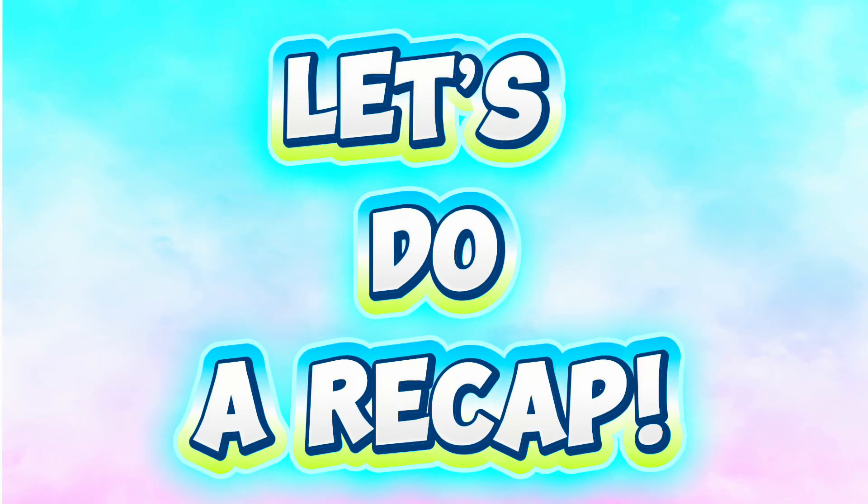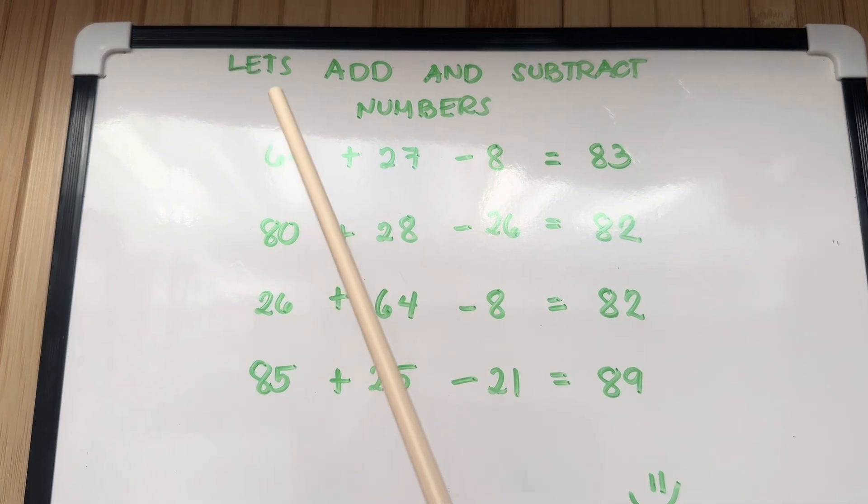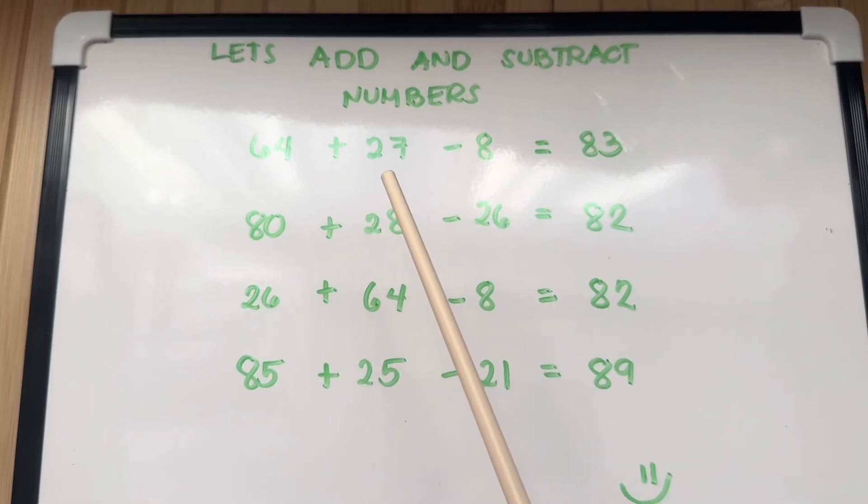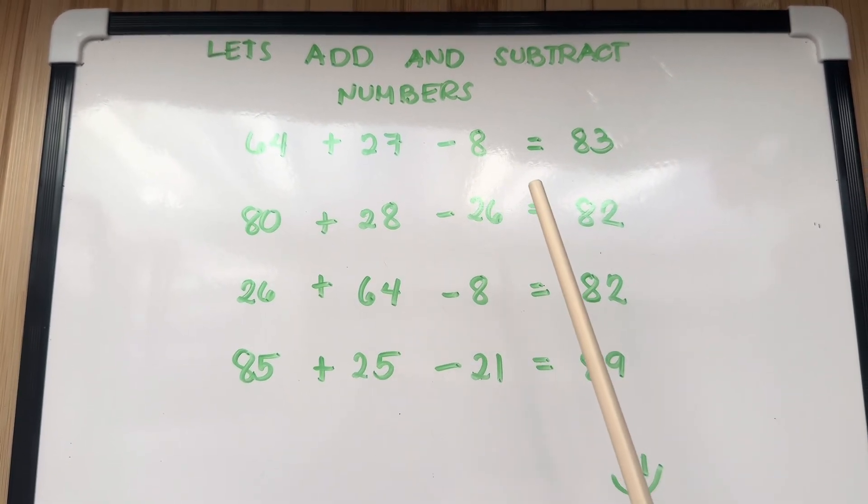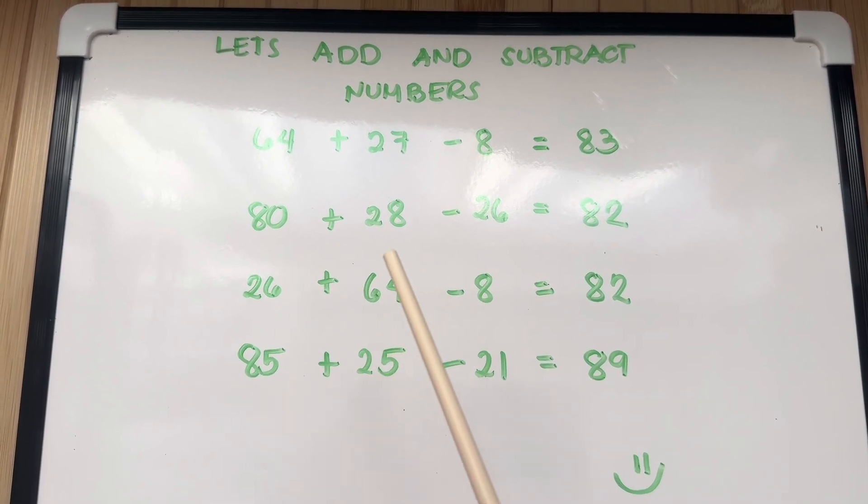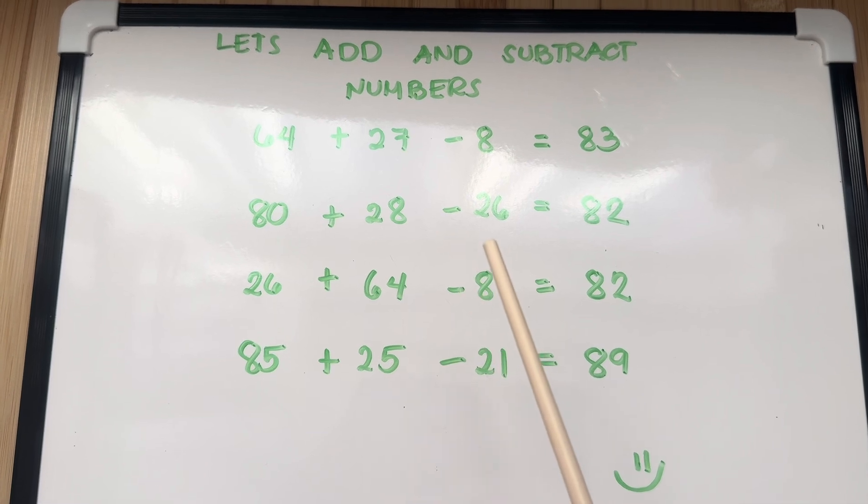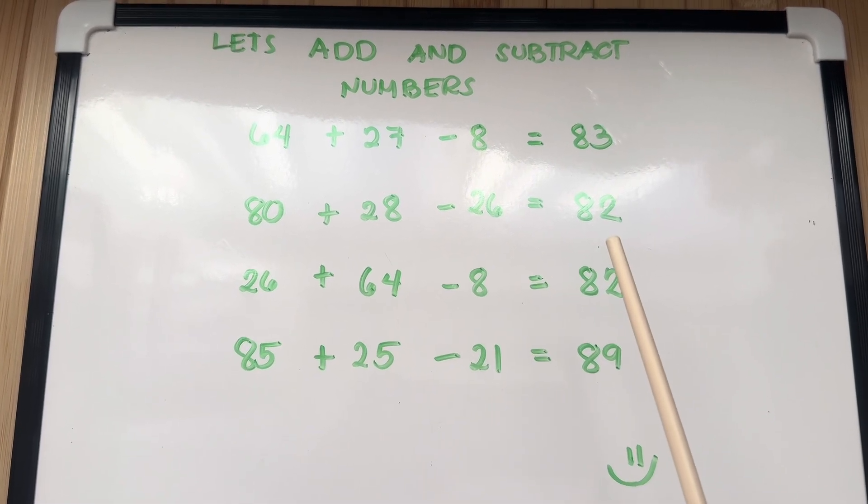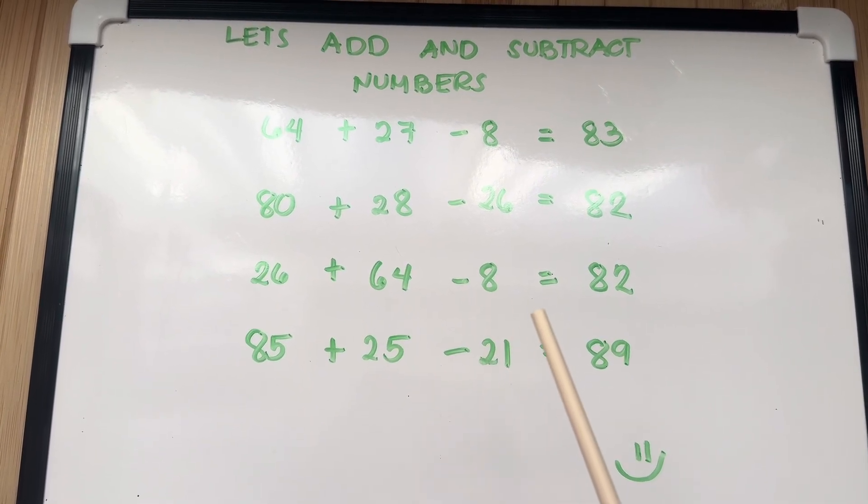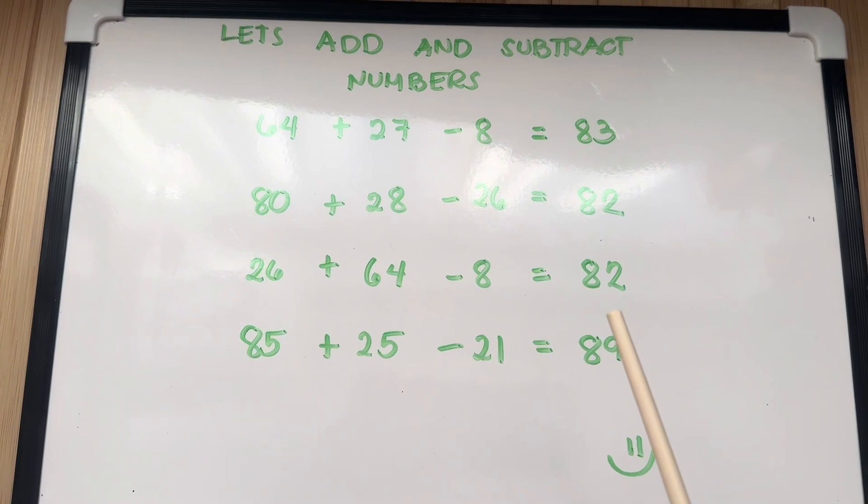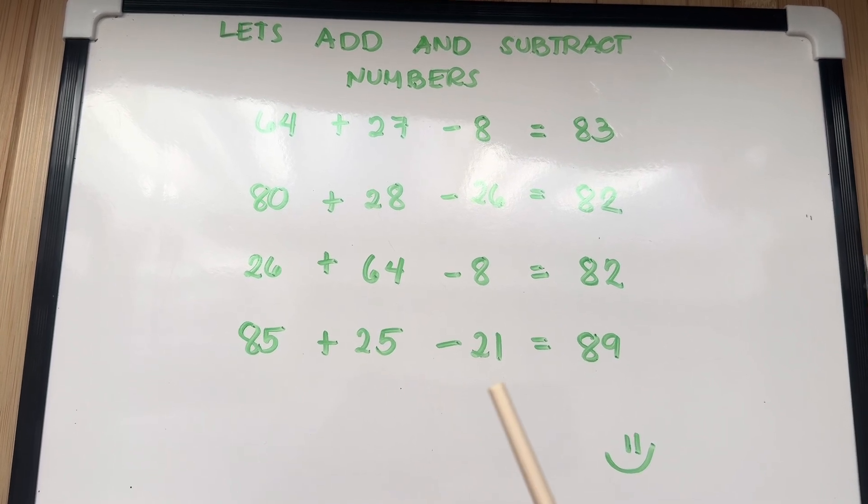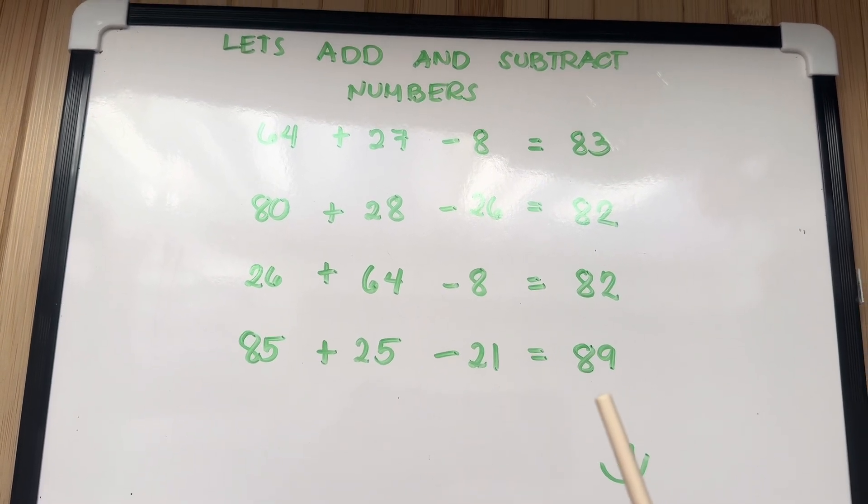Let's do a recap. Let's add and subtract numbers. 64 plus 27 minus 8 equals 83. 80 plus 28 minus 26 equals 82. 26 plus 64 minus 8 equals 82. 85 plus 25 minus 21 equals 89.